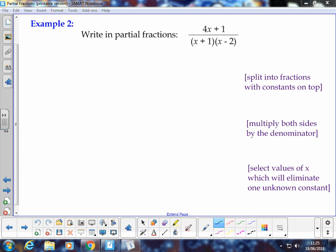This is what I would call type 1 in that when we look at this rational function here, the denominator is already factorized by x plus 1 multiplied by x minus 2.